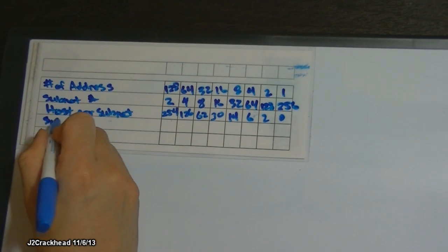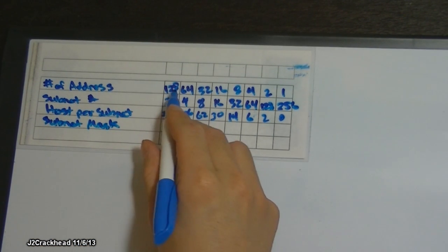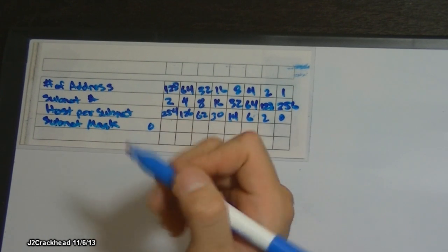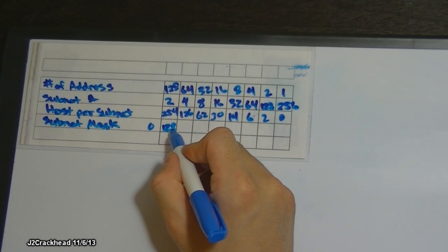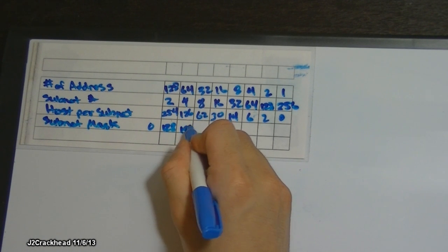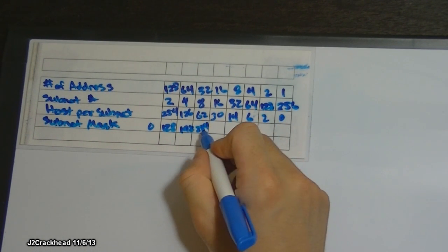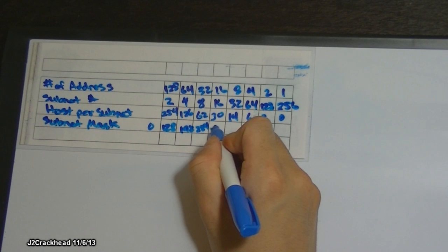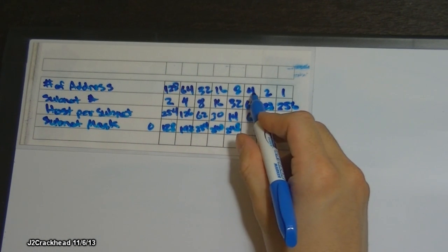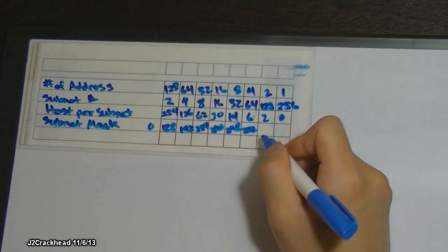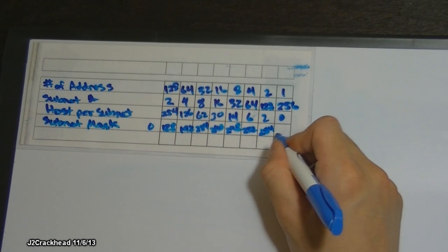The next thing will be the subnet mask. Starting from 0 and adding cumulatively: 0 + 128 = 128, 128 + 64 = 192, 192 + 32 = 224, 224 + 16 = 240, 240 + 8 = 248, 248 + 4 = 252, 252 + 2 = 254, and 254 + 1 = 255.